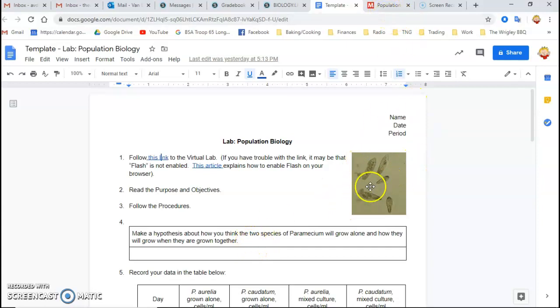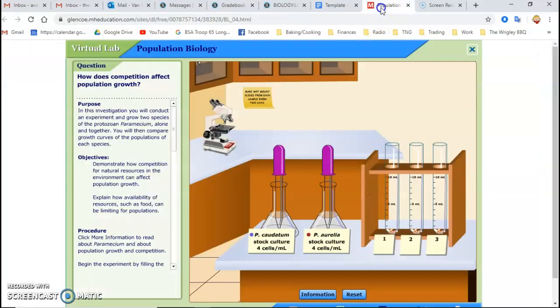So back to the lab. Paramecium are these single-celled organisms, and you're going to be working with two different species, Paramecia caudatum and Paramecium aurelia. And you're going to grow them alone in test tubes one and two. And then you're going to grow them together in test tube number three.